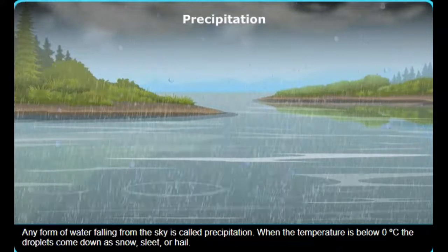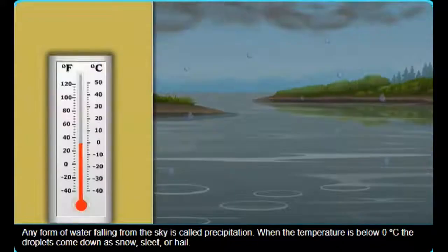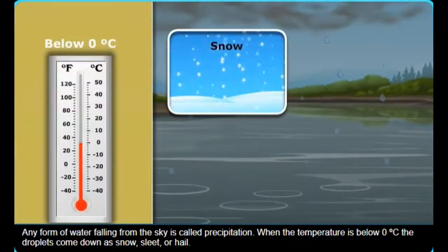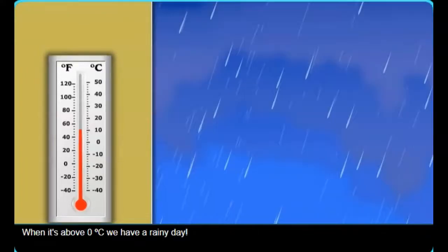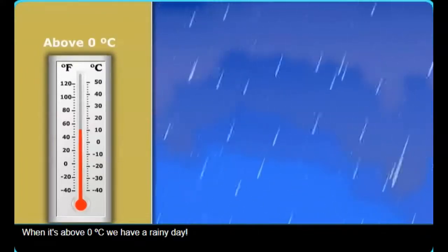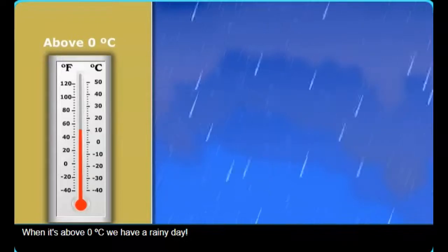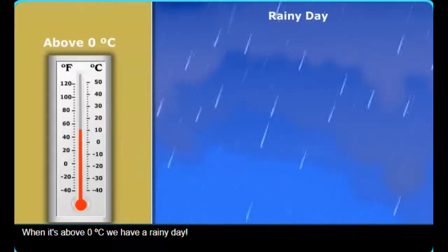When the temperature is below 0 degrees Celsius, the droplets come down as snow, sleet, or hail. What form will precipitation take when the temperature is above 0 degrees Celsius? When it's above 0 degrees Celsius, we have a rainy day.